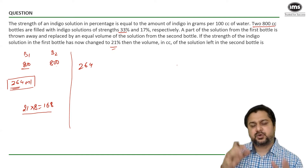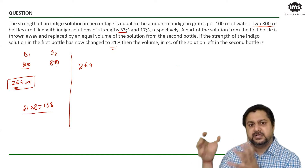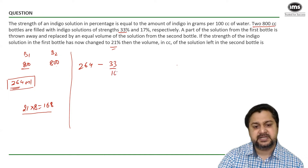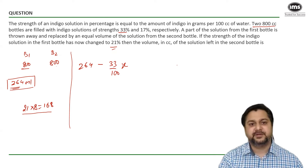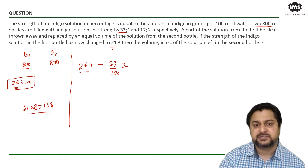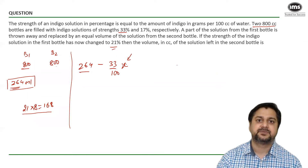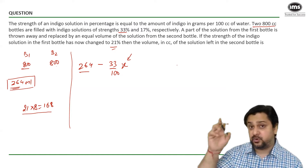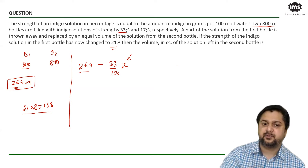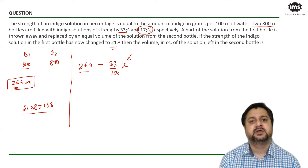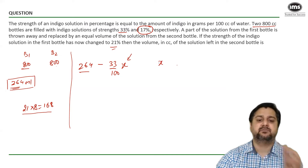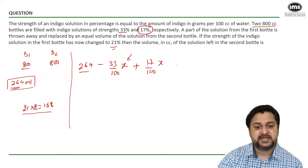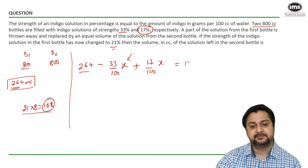When throwing out x amount, the concentration of indigo in that removed portion is still 33%. So 33% of x is the quantity of indigo that has gone out. Now, when we pour the same quantity x from bottle 2, in that x amount the concentration of indigo is only 17%. So 17% of x is the indigo added back. The equation becomes: 264 minus (33% of x) plus (17% of x) equals 168.